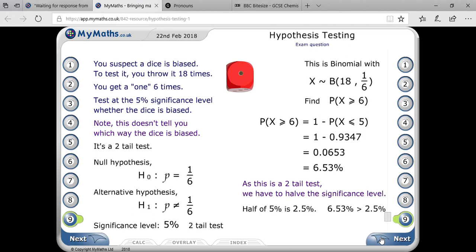6.53% is greater than 2.5 percent, that means we will accept the null hypothesis. So in that condition, we can see that the dice is not biased.